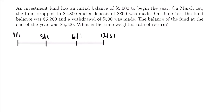Now we have all of our dates written down, so let's write everything we know for each of these four dates. At the beginning of the year, the investment fund has an initial balance of $5,000. On March 1st, the fund dropped to $4,800. We're also told there is a deposit of $800 made on that same date, so we write plus $800 below the balance. This balance does not include the deposit — it is the balance before any deposits or withdrawals are made. Do not combine them; keep them separate.